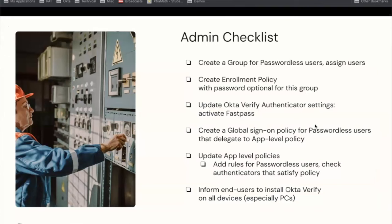Here's the admin checklist for setting up a passwordless flow in OIE: first, create a group for passwordless users; create an enrollment policy that allows passwords to be optional for that group; update your Okta Verify authenticator to make sure FastPass is activated after you upgrade; create a global sign-on policy that delegates to the app level policy for authenticator requirements; add rules to the app level policy for passwordless users; and finally, let your end users know that you're implementing this so they are prepared for the passwordless world.